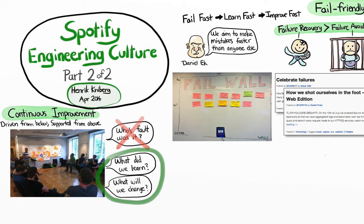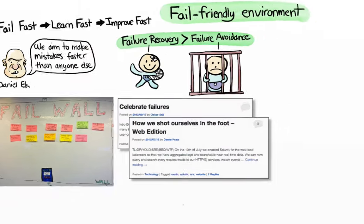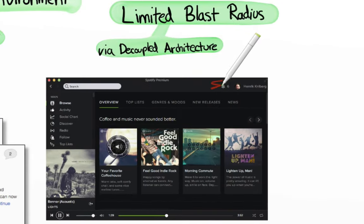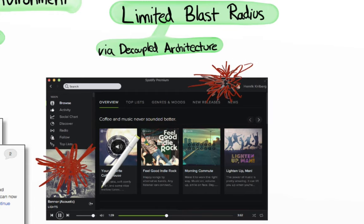Failure must be non-lethal, or we don't live to fail again. So we promote the concept of limited blast radius. The architecture is quite decoupled, so if a squad makes a mistake, it will usually only impact a small part of the system and not bring everything down. And since the squad has end-to-end responsibility for their stuff without handoffs, they can usually fix the problem fast.